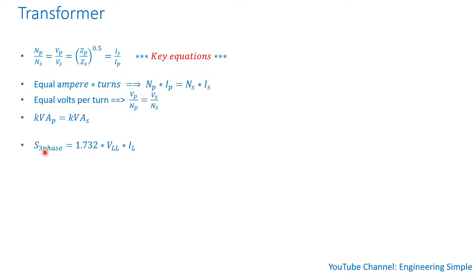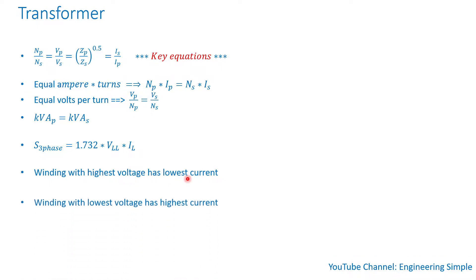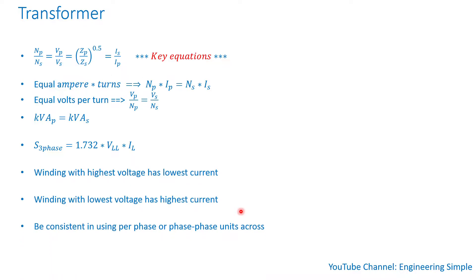Three-phase apparent power is equal to √3 times the line-to-line voltage times the line current — that's how you calculate three-phase apparent power. The winding with the highest voltage has the lowest current, and the winding with the lowest voltage has the highest current. When dealing with transformers, you want to be consistent in using either per-phase or phase-to-phase units.